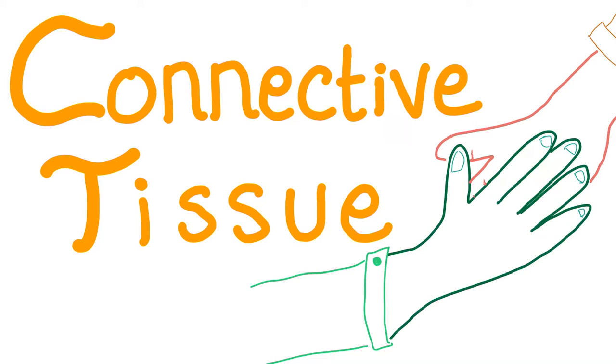In the previous video, we talked about the epithelium. Today, let's talk about the connective tissue. This is Medicosis Perfectionalis, and let's jump into it.